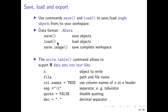The save.image function is similar to the save function but it will store all objects that you have in your current environment. If you want to use data outside of R, the write.table function is useful, which can be used to write a data frame or matrix into a txt file — it is more or less the opposite of the read.table function. With X you can specify the object that you want to save, and file is the path where you want to save it. The other options are basically the same as for read.table.